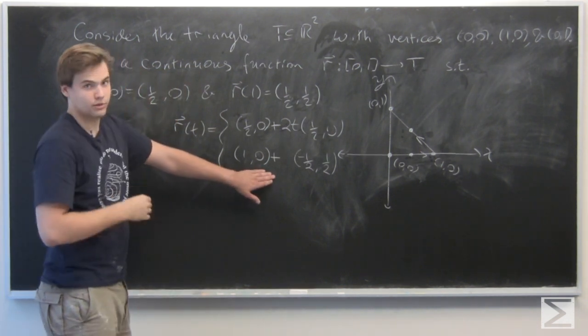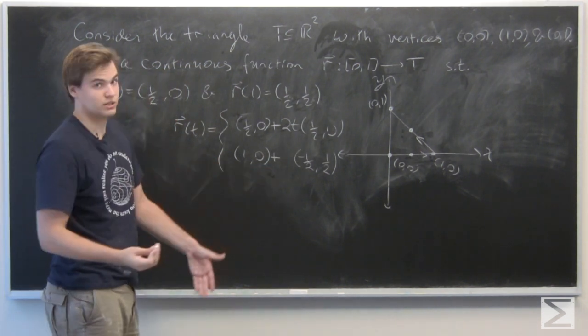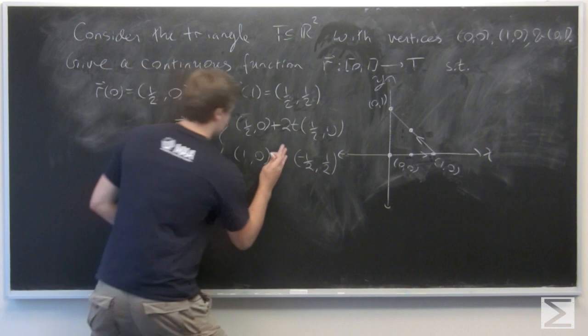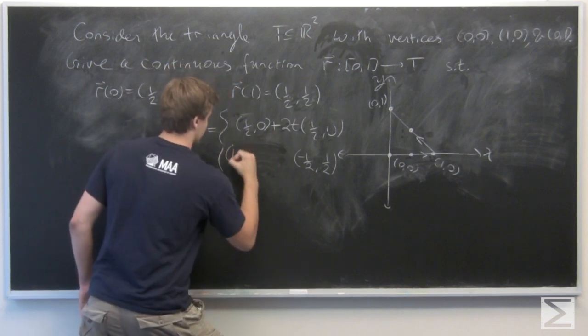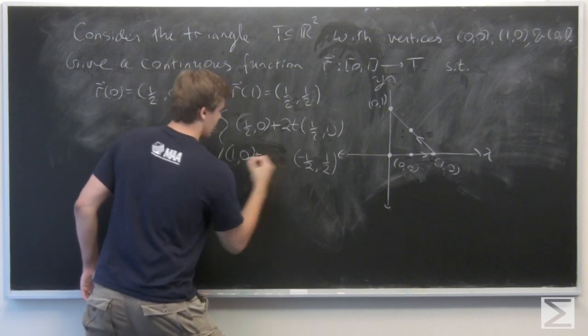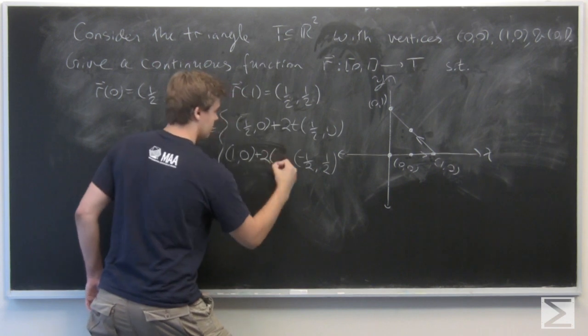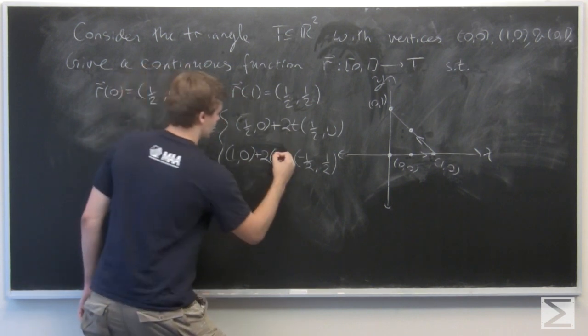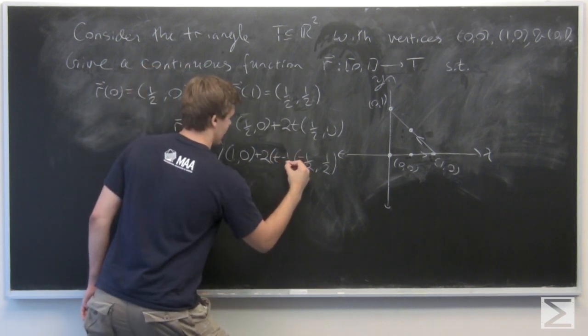But we have to be careful because we're going at a different speed than normal. We're not going at a unit speed. So the actual way to remedy this, I'll move this over a little bit, you do 2, like here, going twice as fast, (t - 1/2).